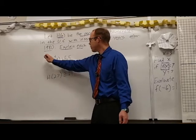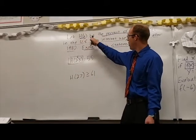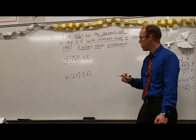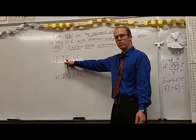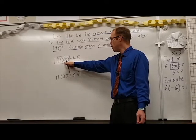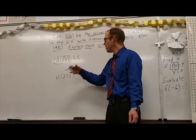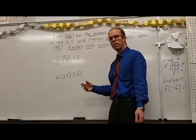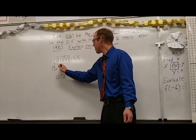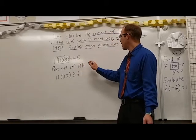H of 23. That's h of x. That is the percent of households in the United States that have access to the internet in 2003. The percent of households, I'm going to abbreviate that, in the United States that have access to the internet in 2003.